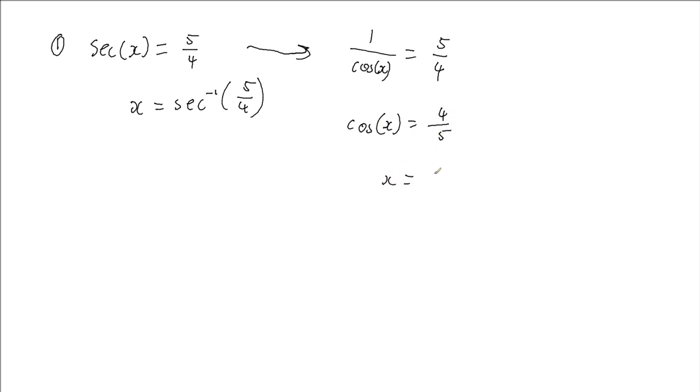And so now we can get x, which is going to be the inverse cos of 4 fifths. So we've gone from the secant of 5 quarters to the inverse cosine of 4 fifths.